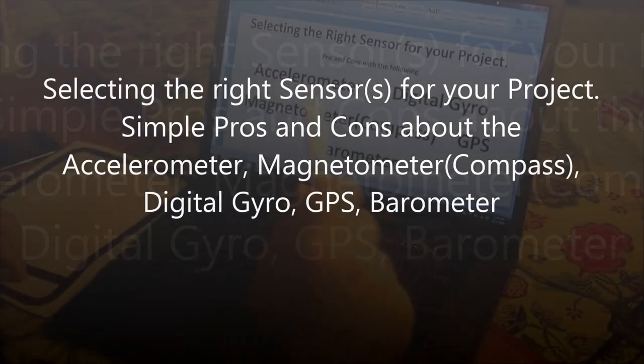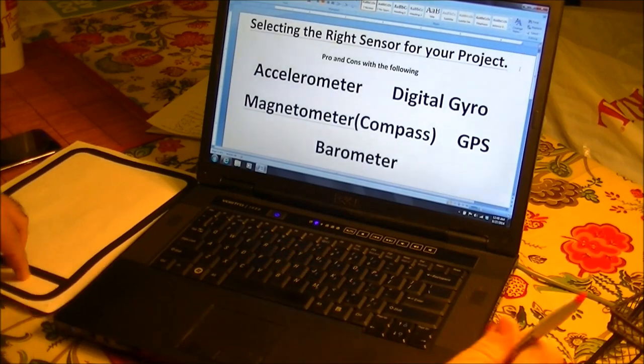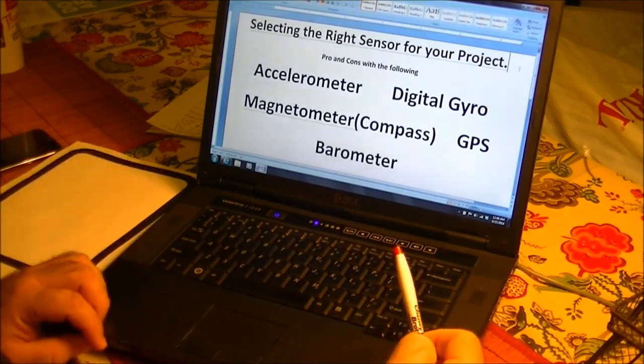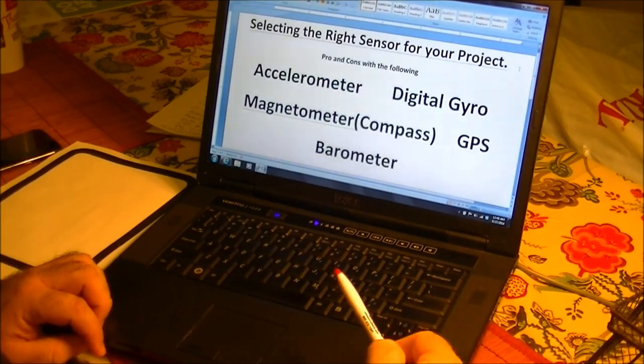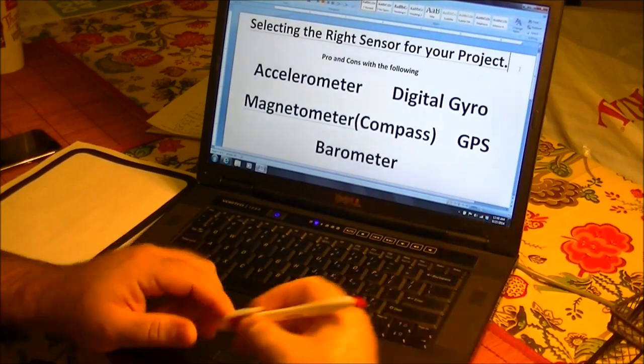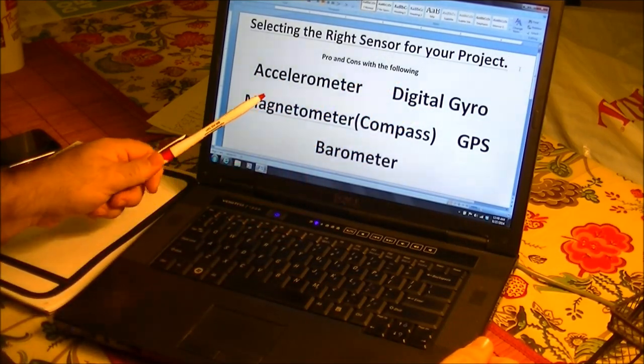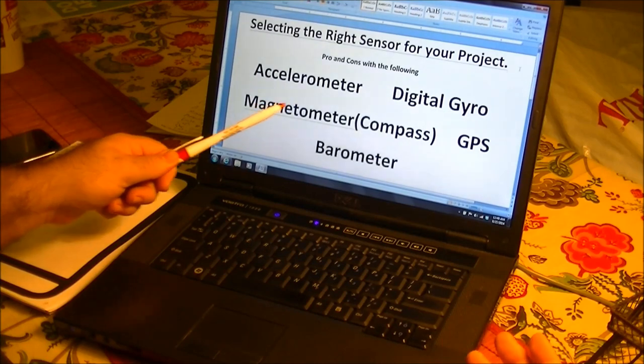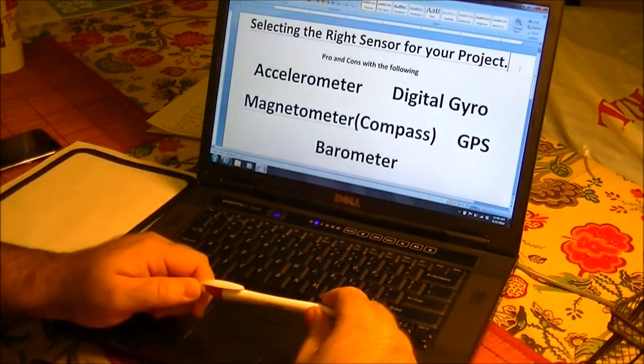Hi, my name is Carlos Pinheiro and I'm going to give you the ins and outs for selecting a sensor. There are so many sensors for your project today. So selecting the right sensor, the pros and cons are the following: the accelerometer, the digital gyro, the magnetometer which is the digital compass, using the GPS for direction, and the barometer.